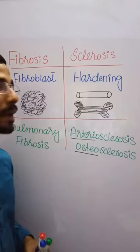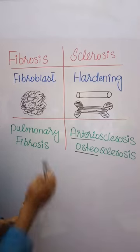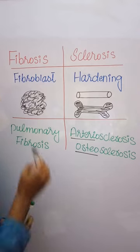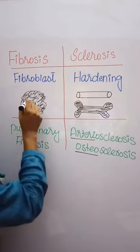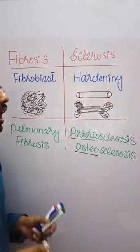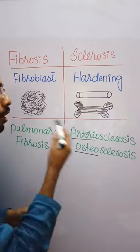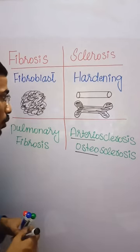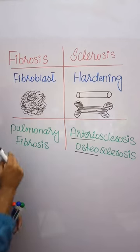What is the difference between fibrosis and sclerosis? Fibroblasts form different fibers, resulting in the formation of fibrosis. Sclerosis means hardening — it can be in an artery, bone, or anywhere in the body.